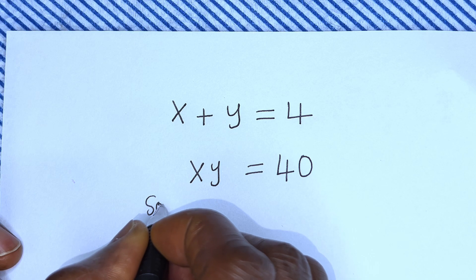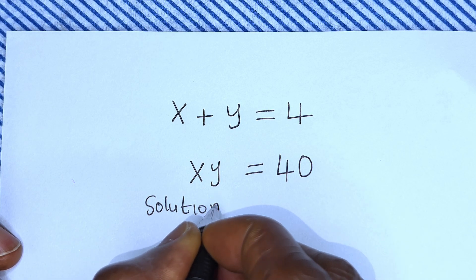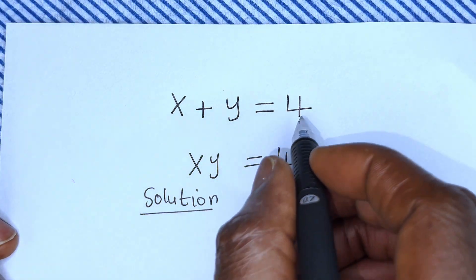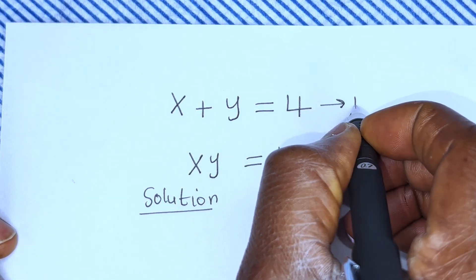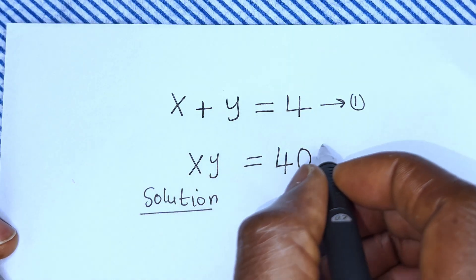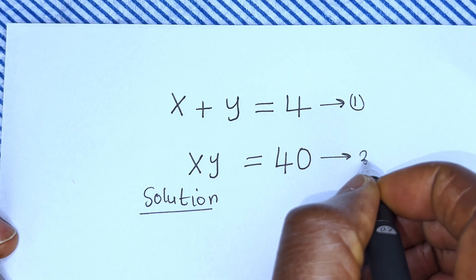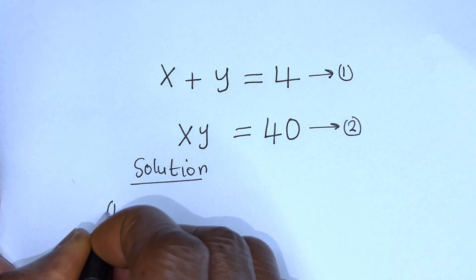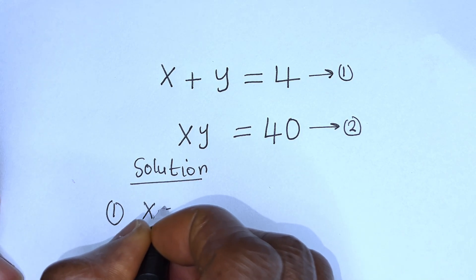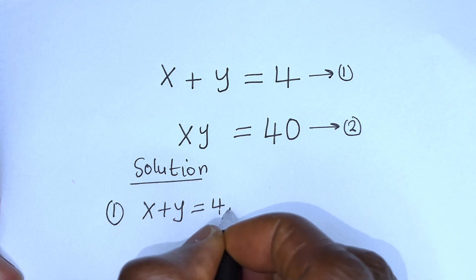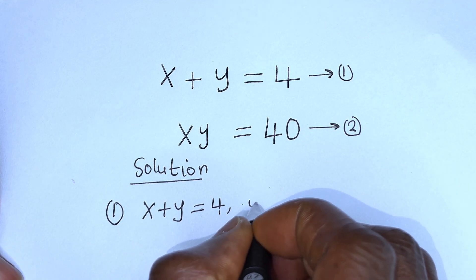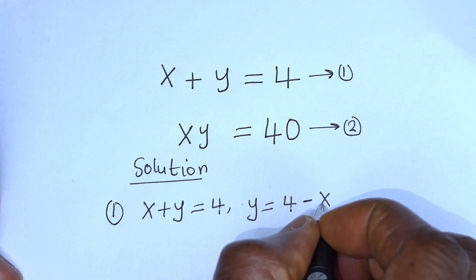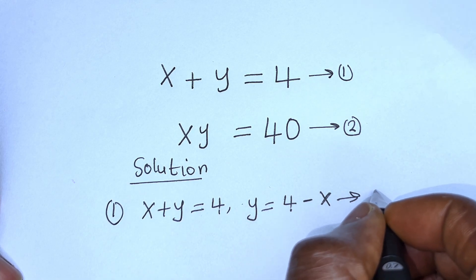Solution. x plus y is equal to 4 — let us call this equation 1. xy is equal to 40 — let us call this equation 2. From equation 1, x plus y is equal to 4, then y is equal to 4 minus x — let us call this equation 3.